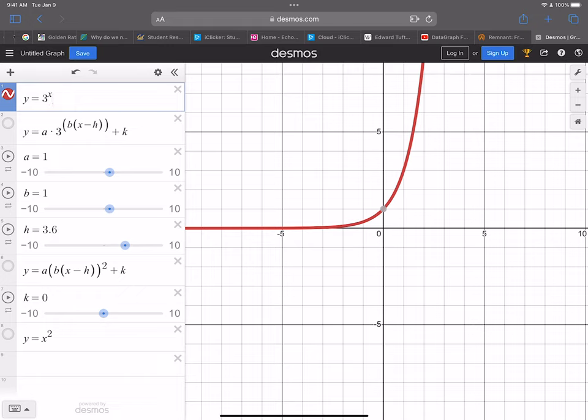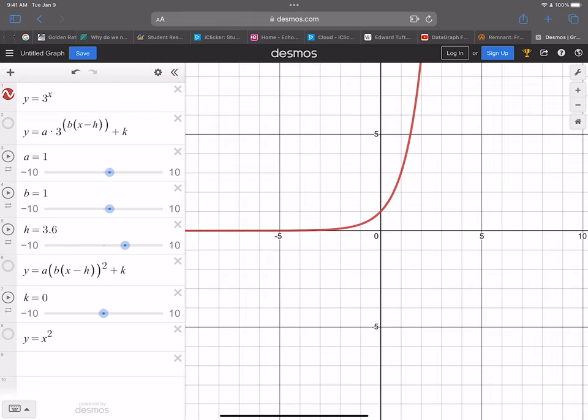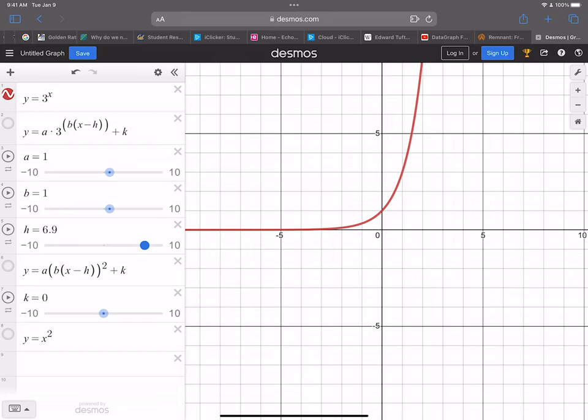The second part of the question asks: what if I shift f(x) nine units to the right? If you watched that other video, then hopefully you recognize that's really changing my h to 9. The function below the red one, y = a·3^(b(x-h)) + k, is my fully capable transformation version of y = 3^x. If I turn that on, that's blue.